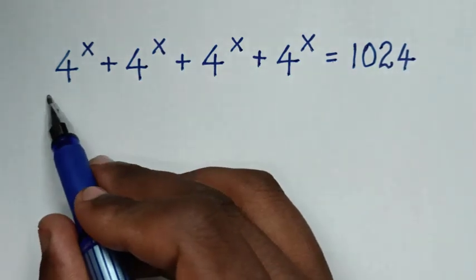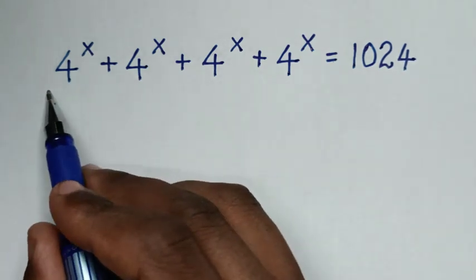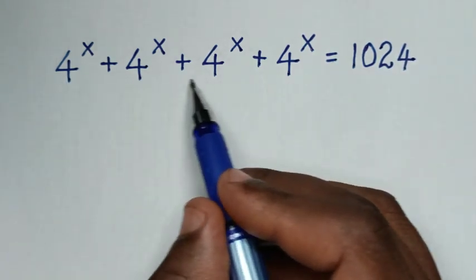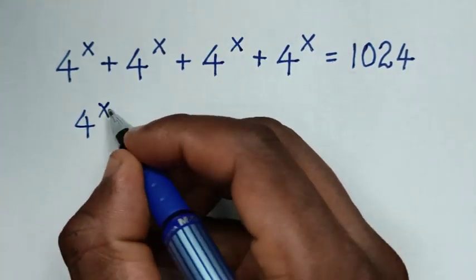To find the value of x from this equation, first, from the left side, 4^x is common. So we will take 4^x out of the bracket.